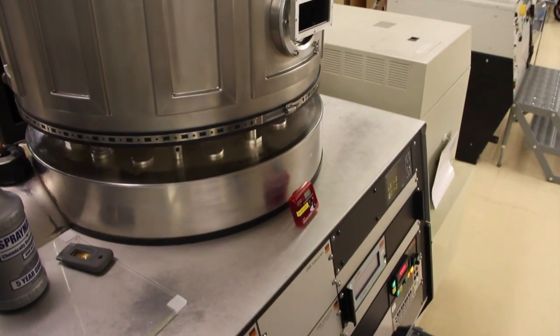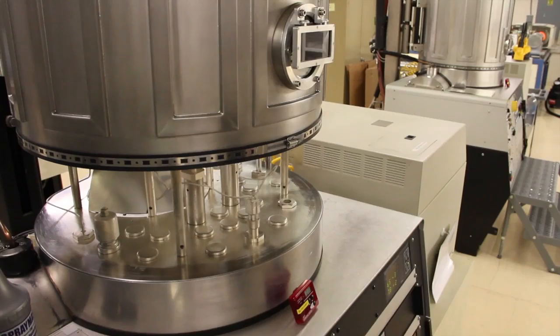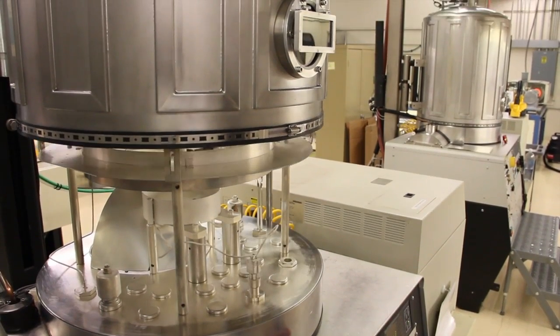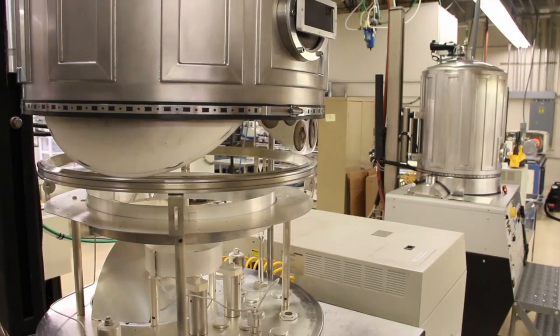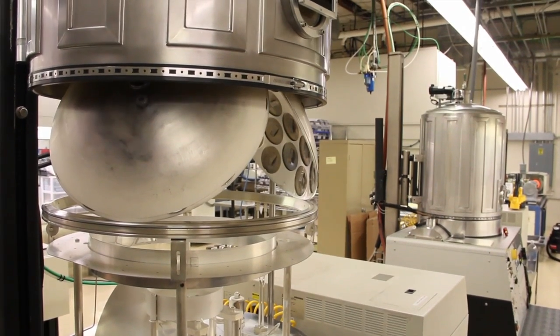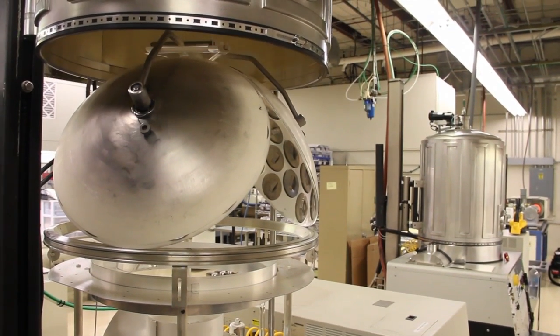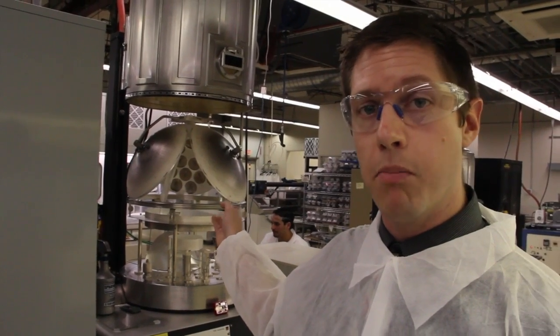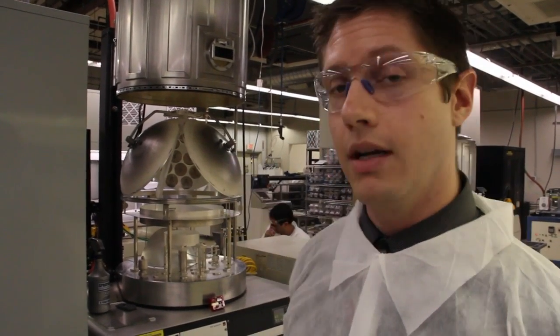This next step here is our silver evaporation process. We evaporate silver on either side of the wafer to make a good metallurgical bond between the stacks. What you see here is planetaries that revolve around and we literally evaporate silver by boiling it. It evaporates up on either side of the wafer.